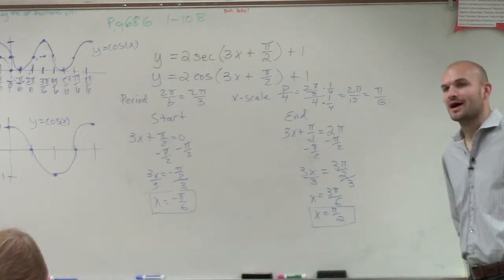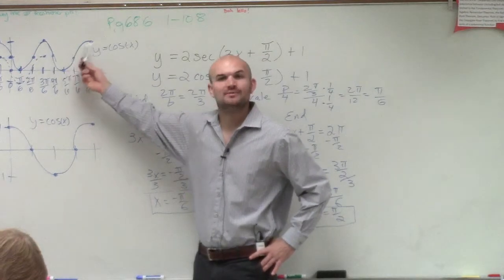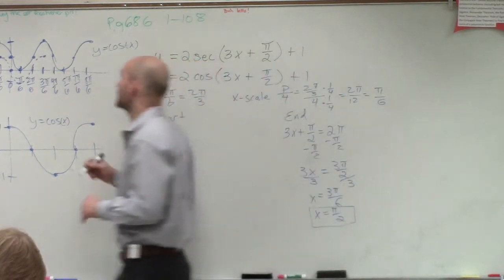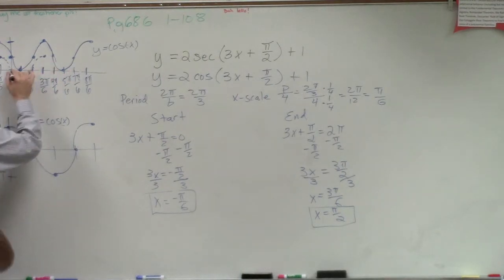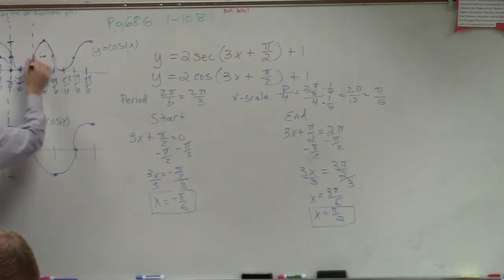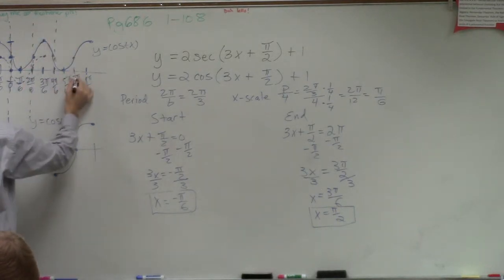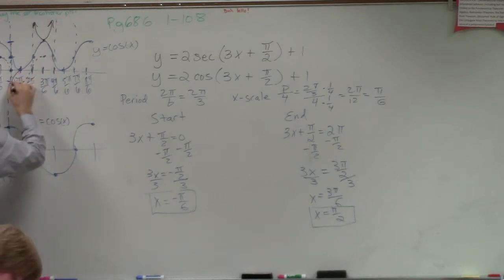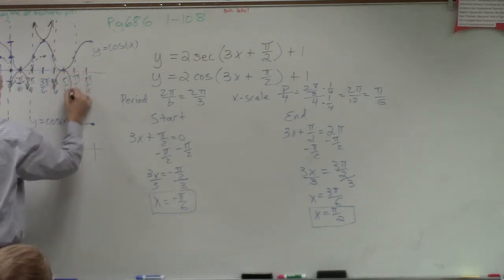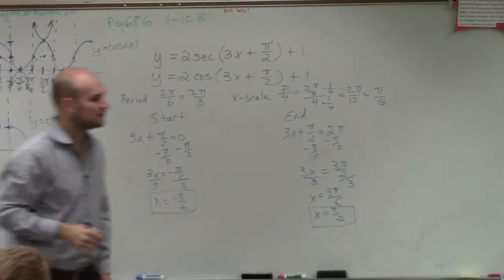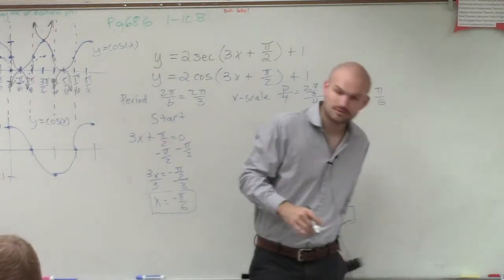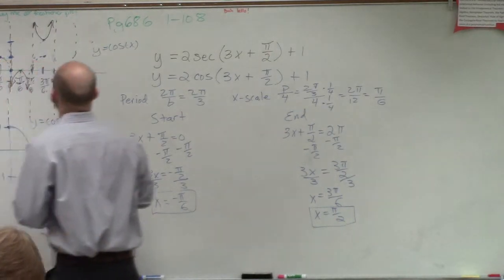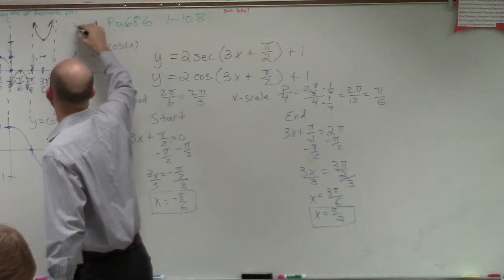What you want to look at is we have the cosine graph, but that's not what we're asked to graph — we're asked to graph secant. When we had x-intercepts on the cosine graph, those become our asymptotes for the secant graph. So the x-intercepts become asymptotes, and once we've created the asymptotes, we eliminate the cosine guide graph and we're left with the graph of the secant.